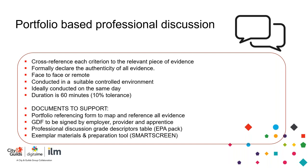The portfolio must be cross-referenced against the criteria on each piece of evidence, ensuring each piece maps to the KSBs within the assessment plan. The portfolio needs a formal declaration that the evidence is authentic and completed by the apprentice. The EPA itself can be done face to face or remotely — currently many are opting for remote.